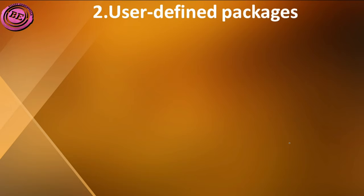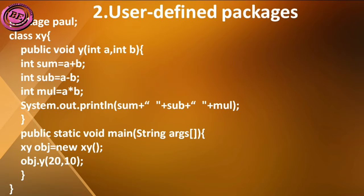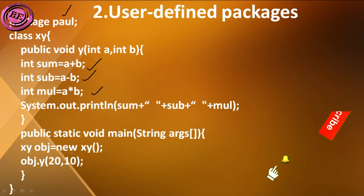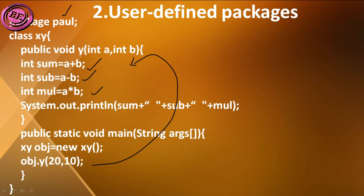Now let us discuss about user-defined packages. Here is an example — I am creating a package named 'poll'. In this package I have a class named xy and a method named y with parameters int a and int b. I am going to perform addition, subtraction, and multiplication in this package. The main method gives inputs to the method, and I am creating an object: xy obj = new xy(). By using this object I give inputs to the method, with a value as 20 and b value as 10.